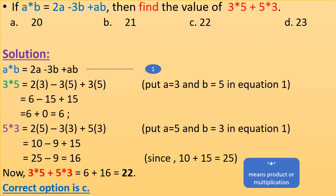If a∘b equals 2a minus 3b plus ab, find the value of 3∘5 plus 5∘3. For 3∘5, put a equals 3 and b equals 5 in the equation: 2 times 3 minus 3 times 5 plus 3 times 5 equals 6 minus 15 plus 15 equals 6.